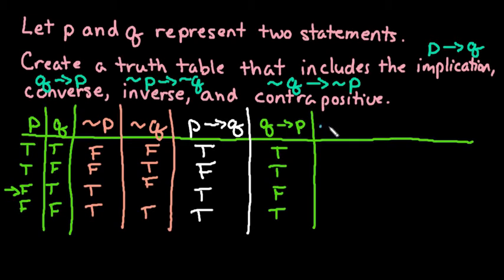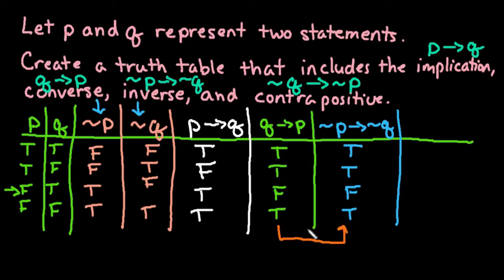So the inverse is we're going to look at not P, then not Q. So we have to look at the not P column first, followed by the not Q column. So false, false is going to be true. False, true is going to be true. True, false is going to be our false statement. And true, true is going to be true. If you notice, these two columns are the same. The converse and the inverse will always be the same as far as truth values go.